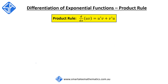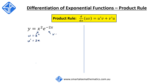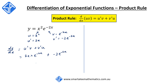Our next example involves the use of the product rule. The derivative of two functions u·v equals u'v + v'u. For y = x²·e^(-2x), we let u = x² so u' = 2x, and v = e^(-2x) so v' = -2e^(-2x). Applying the product rule, dy/dx = 2x·e^(-2x) + (-2e^(-2x))·x², which simplifies to 2xe^(-2x) - 2x²e^(-2x). This is our final expression for dy/dx.